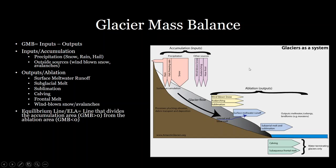The area between the ablation zone and the accumulation zone is called the equilibrium line, or equilibrium line altitude (ELA). That's the line that divides the accumulation zone from the ablation zone. Below the ELA, in the ablation zone, glacial mass balance is negative, and above the ELA, in the accumulation zone, mass balance is positive.